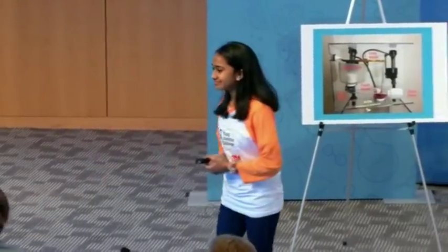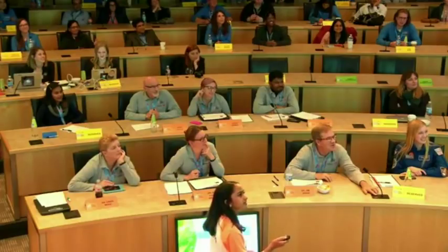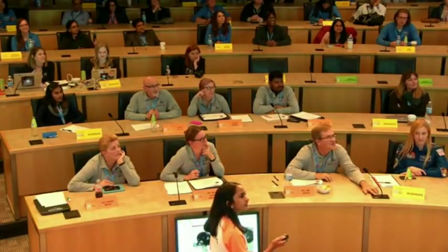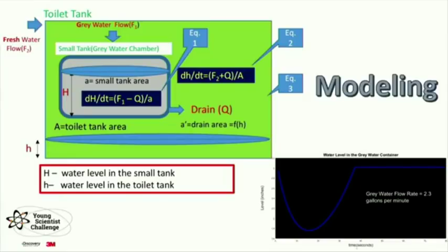Can you talk through the equations you showed? dh/dt is the change in height versus the change in time, and that equals f1, which is the gray water flow rate, minus q, which is the draining rate, divided by A, the area of the small tank. For the main tank, dh/dt is the change in water level over time, and f2 is the fresh water flow rate plus the draining flow rate, because the fresh water and the draining water both come into the same place, divided by the area of the main tank.